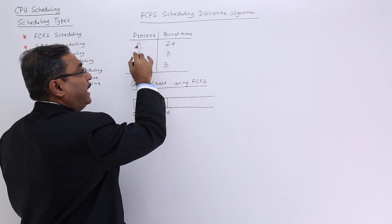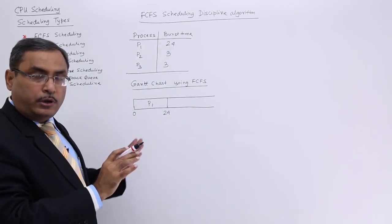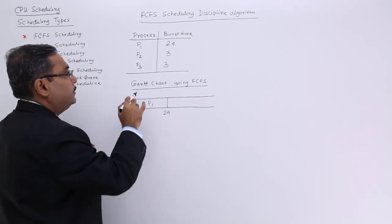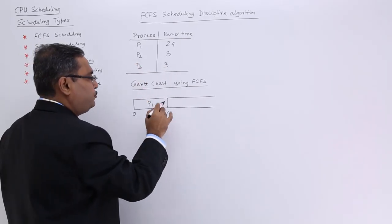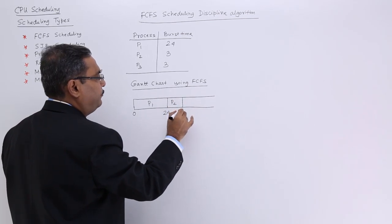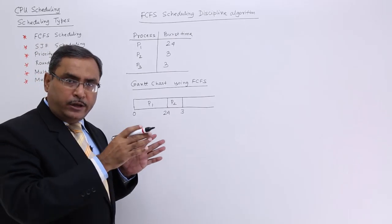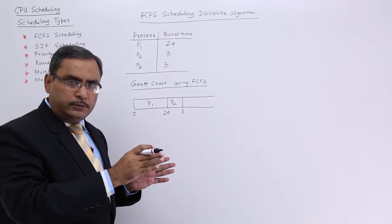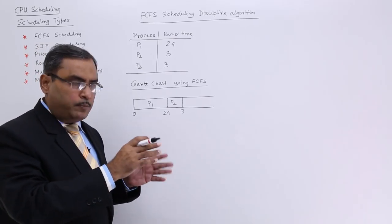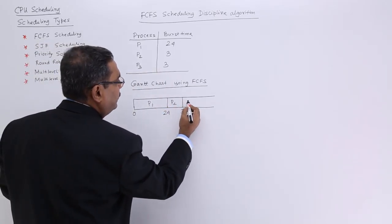First come first serve means we go for P1, then P2, then P3 in this order. P2 will have a burst time of 3 units. Burst time means the time required for a process to get completed.